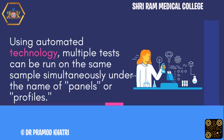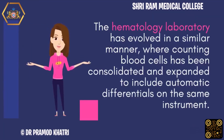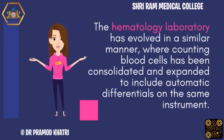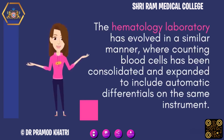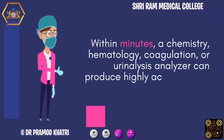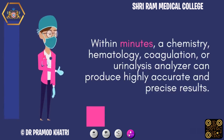The hematology laboratory has evolved in a similar manner, where counting blood cells has been consolidated and expanded to include automatic differentials on the same instrument. Within minutes, a chemistry, hematology, coagulation, or urinalysis analyzer can produce highly accurate and precise results.